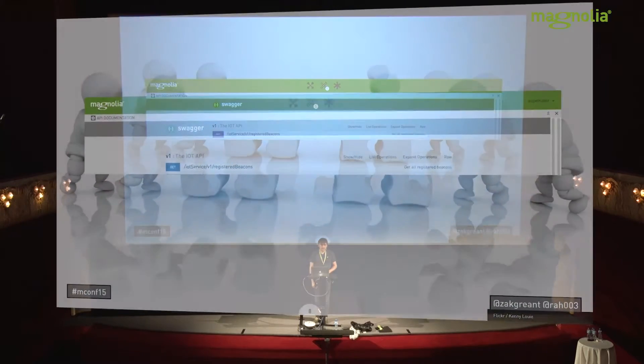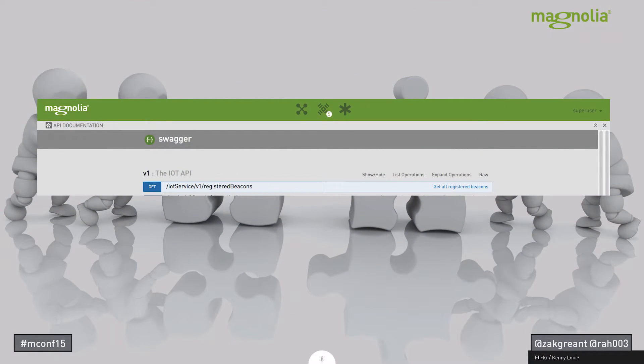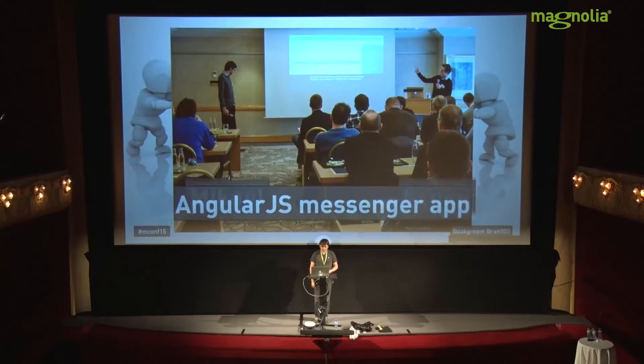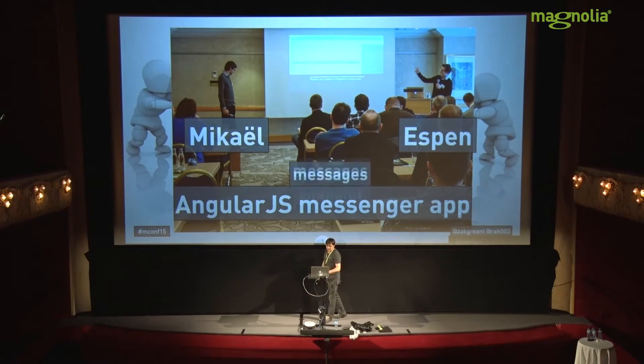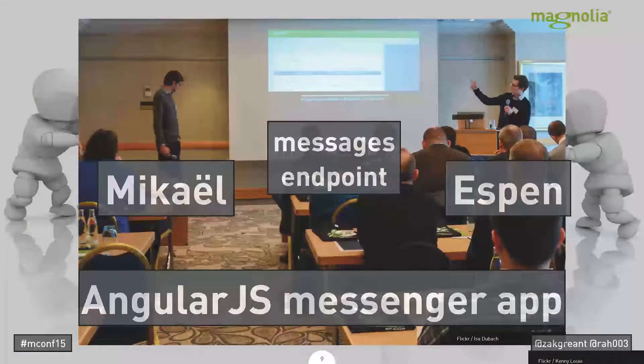We also keep adding extra endpoints for special things like beacons. And sometimes we do interesting things — for example, Mika and Espen presented at Amplify and Grid Create in Munich in January, showing how they exposed the messages endpoint in Magnolia and built a custom AngularJS messenger app. It was a really cool use case example showing how easily you can use that API and build something custom on top of it.